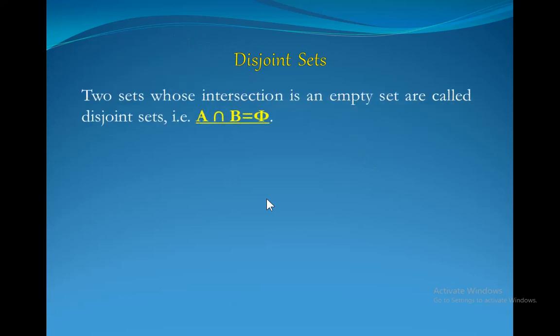Two sets whose intersection is an empty set are called disjoint sets, that is A intersection B is equal to empty.